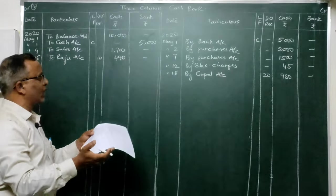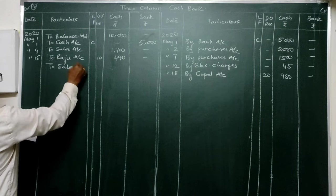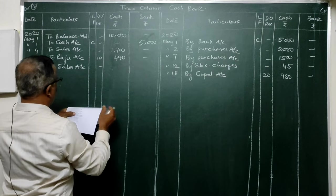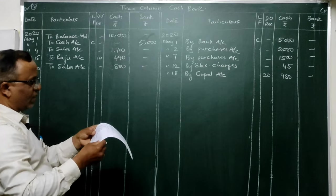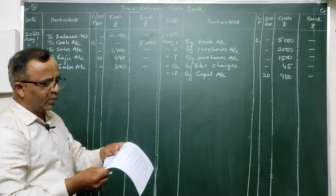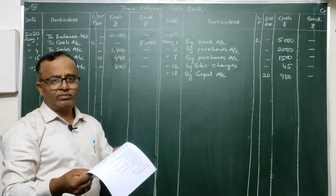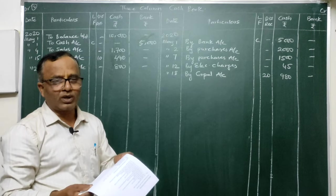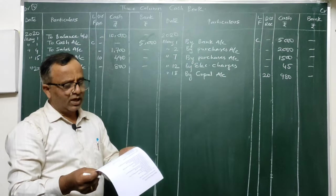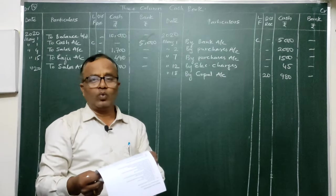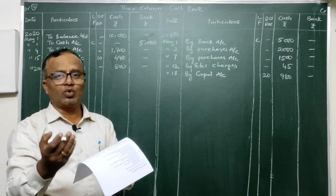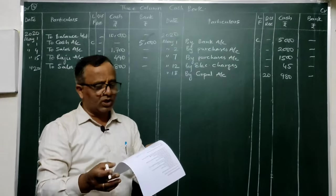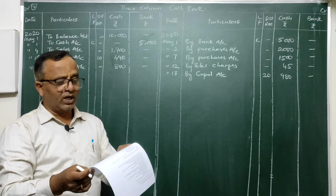On the 20th: sold goods for cash — Cash Account Dr. To Sales — post 800 in cash column. On the 22nd: sold goods to Chaitanya on credit — Entry: Chaitanya Account Dr. To Sales — no cash or bank involved, so no posting in cash book. On the 23rd: purchased from Guru on credit — Entry: Purchase Account Dr. To Guru — no cash or bank, so no posting here either.